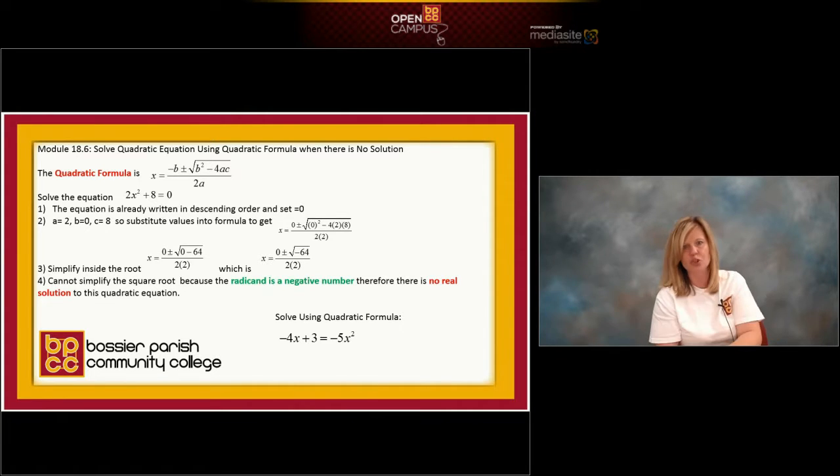Over two times two. I'm still not done with the square root. I have to subtract. So when I subtract zero minus sixty-four inside my square root, my radicand is negative sixty-four. So now I have x equals zero plus or minus square root negative sixty-four over two times two. And I stop.